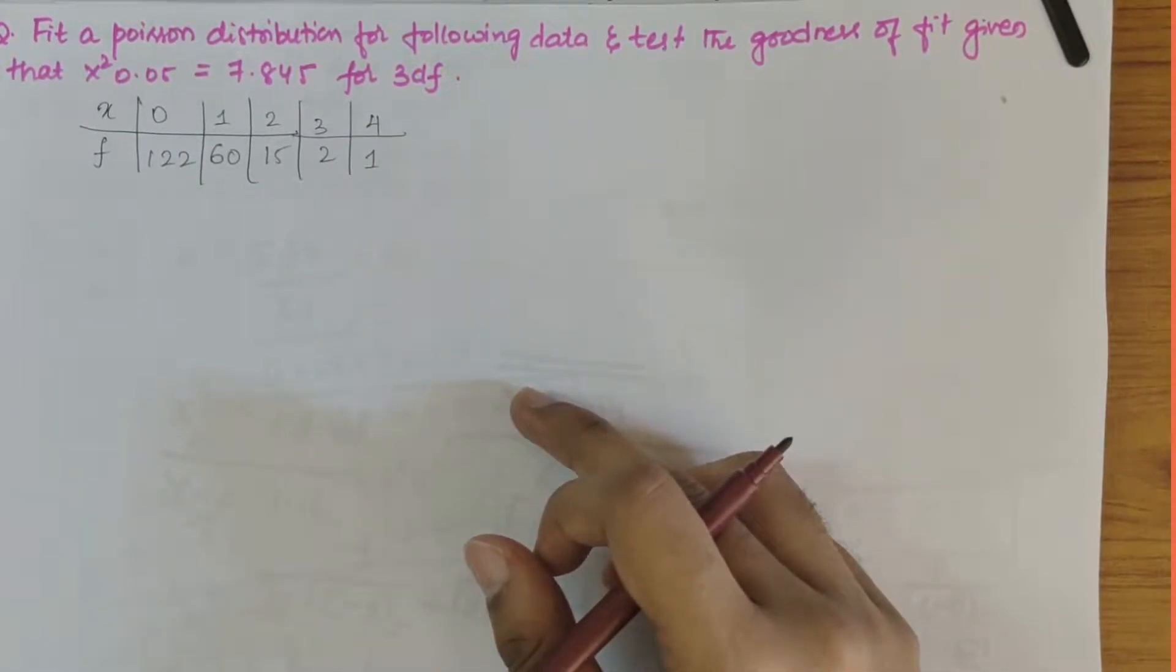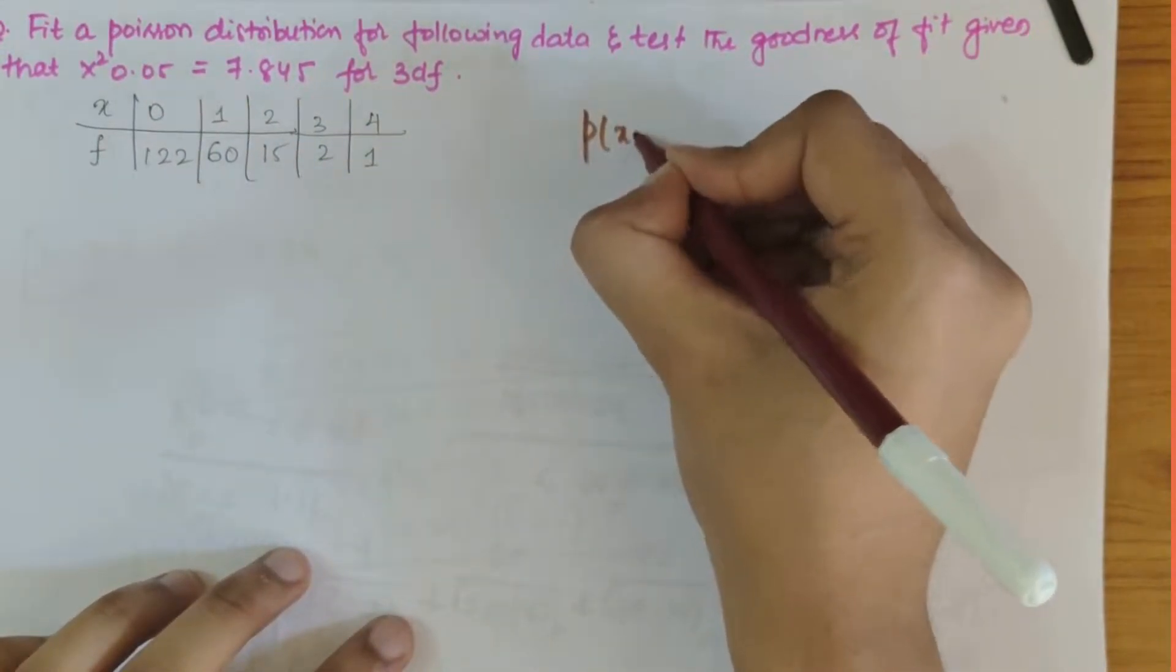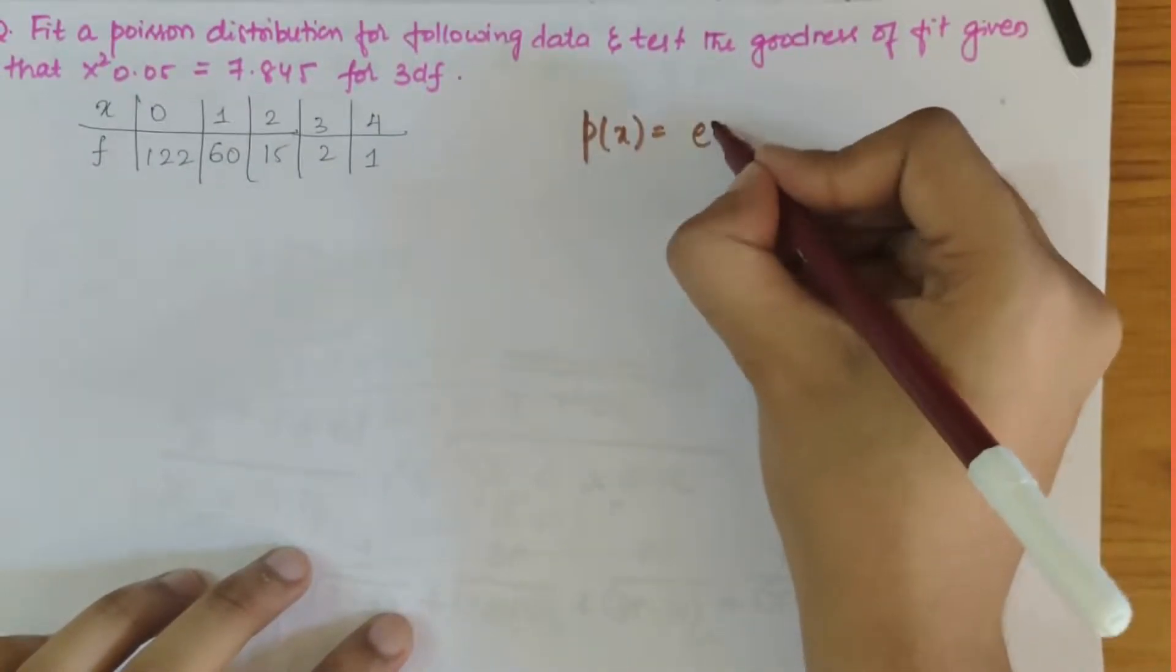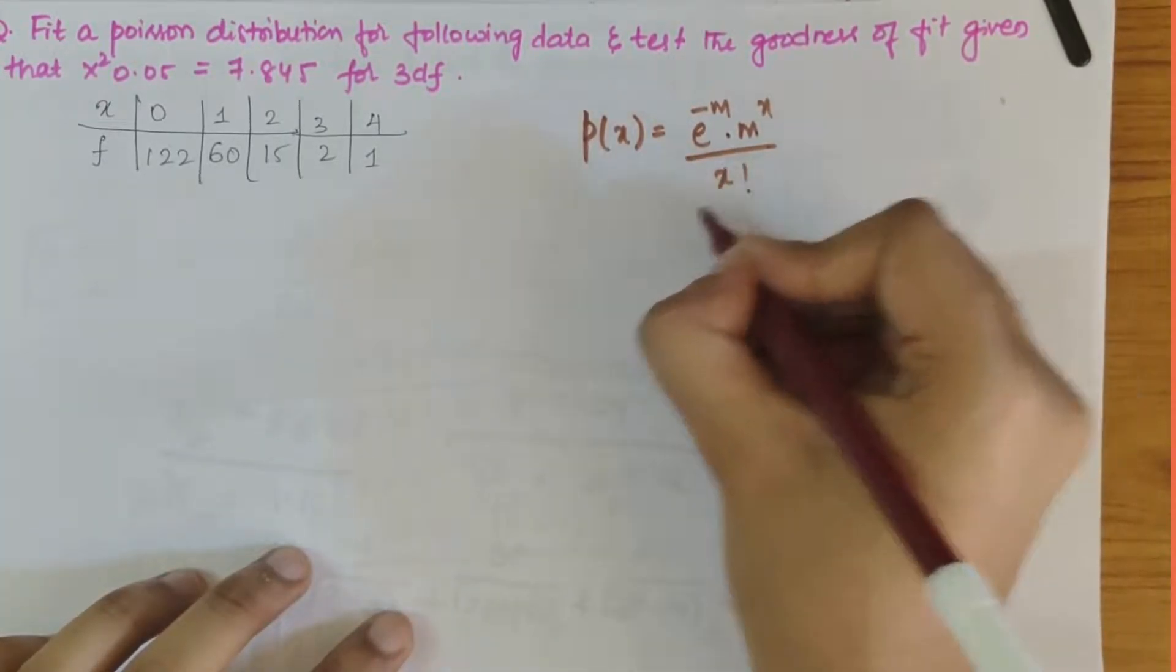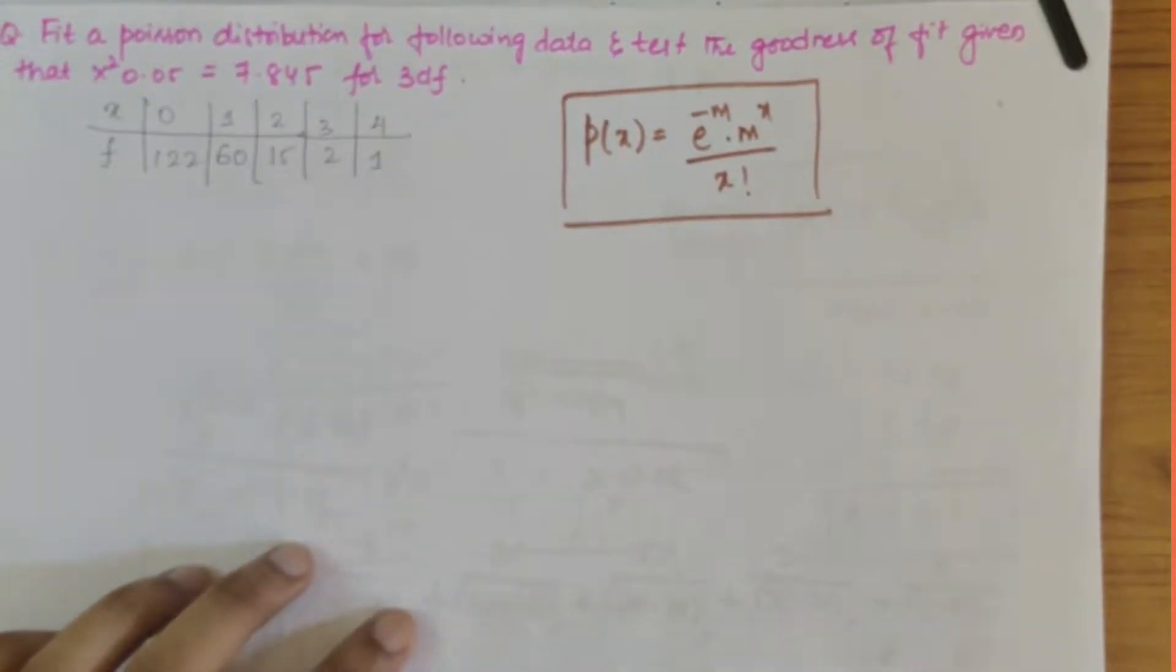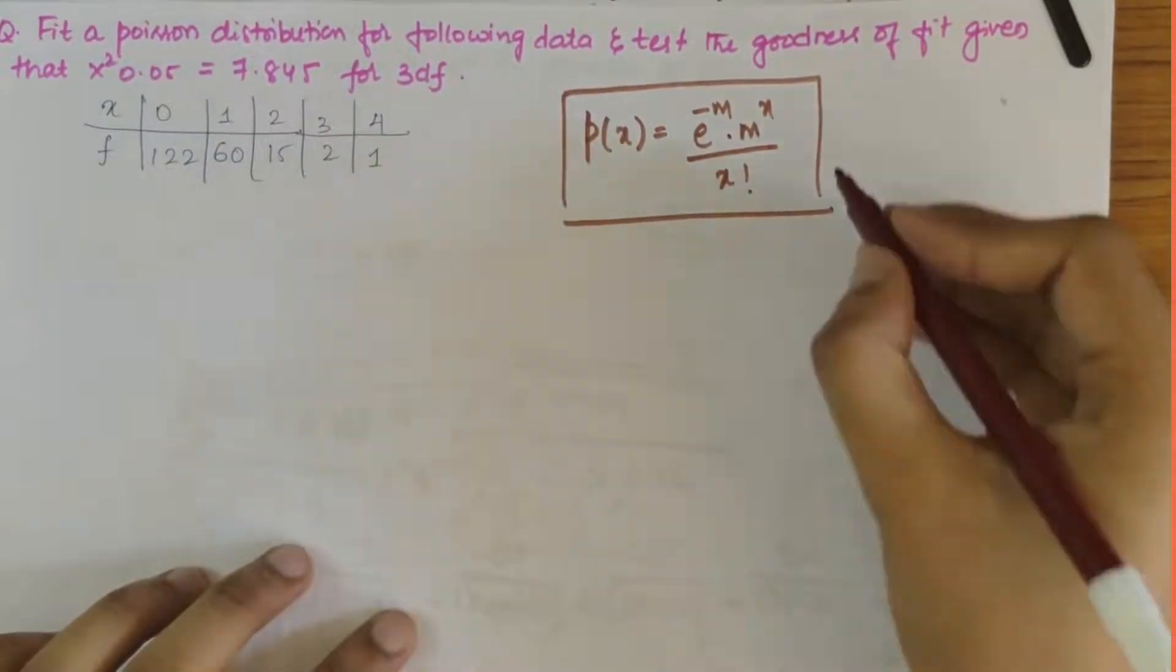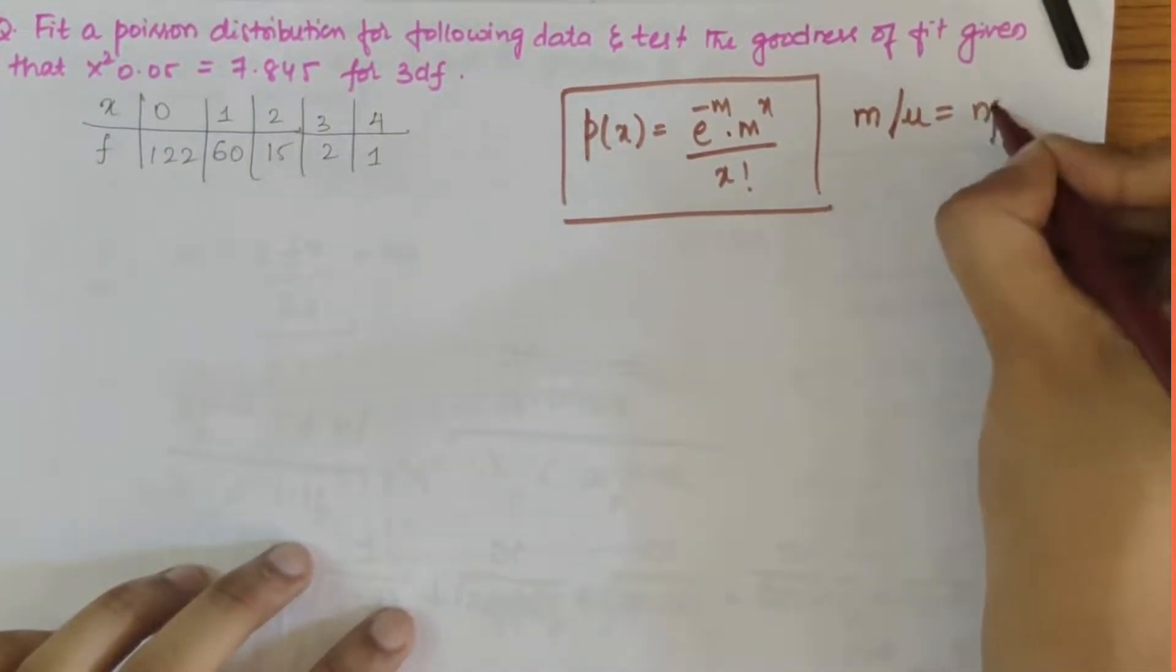Since they've said it is a Poisson distribution, let's write the Poisson distribution formula first. That is p of x equals e to the power minus m times m to the power x divided by x factorial. This is our Poisson distribution formula. Now we have to find what m is, where m or mu is np, that is the mean.